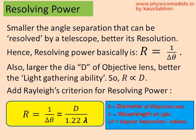Also, R is proportional to D, the diameter of the objective lens, because a large lens will gather more light from those two craters. So Rayleigh's equation is D divided by 1.22 lambda, and lambda came in to take care of diffraction.